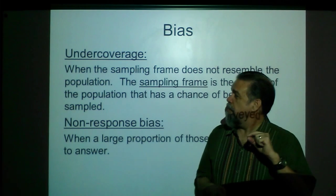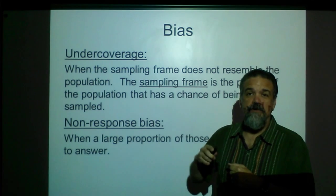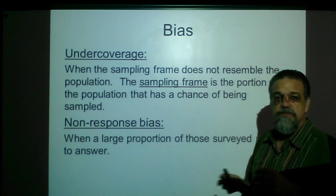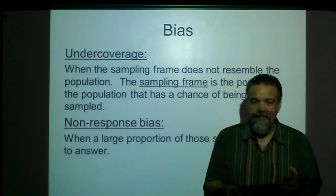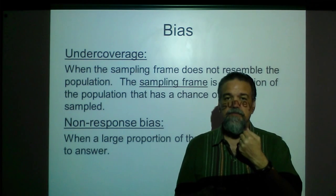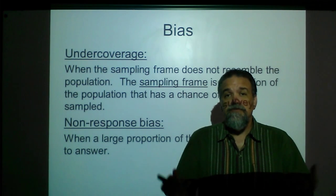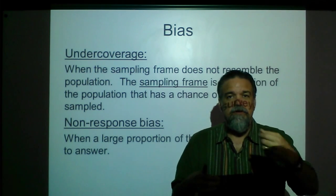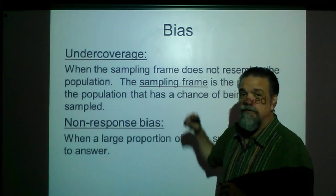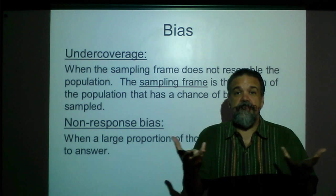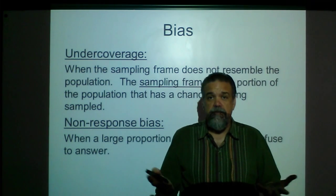This leads us to a couple of problems in their survey. Number one: under coverage. Under coverage is when the sampling frame does not resemble the population. The sampling frame is the portion of the population that has a chance of being sampled. In this case, the sampling frame was the people who received the surveys — those they got addresses for. If you weren't among people who had cars, magazine subscriptions, or phones, you were not in the sampling frame. Their sampling frame was wealthy people, while the population was everyone going through the Depression.